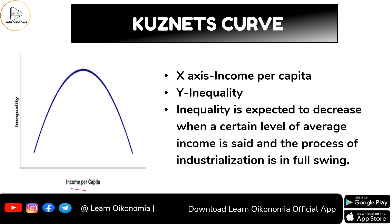You are measuring income per capita along the x-axis and inequality along the y-axis. If you look at the curve, the shape of the curve is inverted U. This curve explains that up to a certain point, both income and inequality are rising together. Inequality is expected to decrease when a certain level of average income is reached and the process of industrialization levels off. So this is that particular point from which you can have a reduction in inequality.